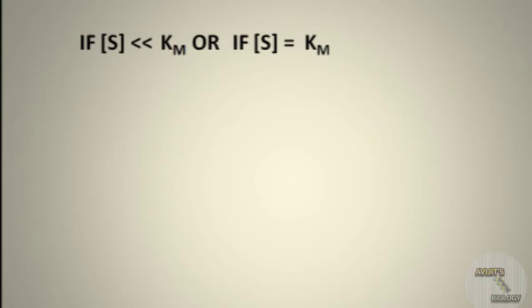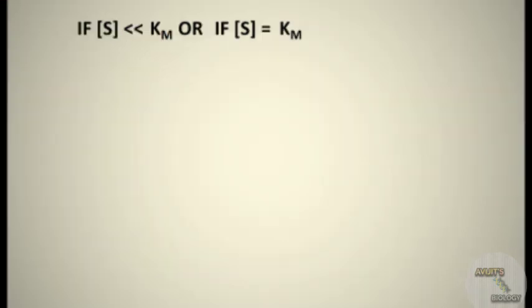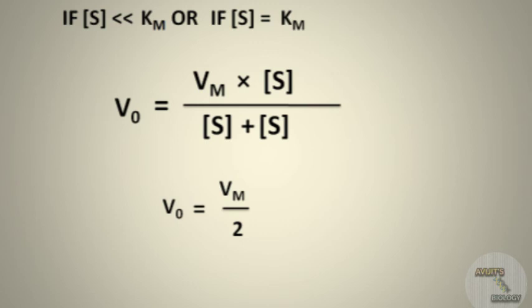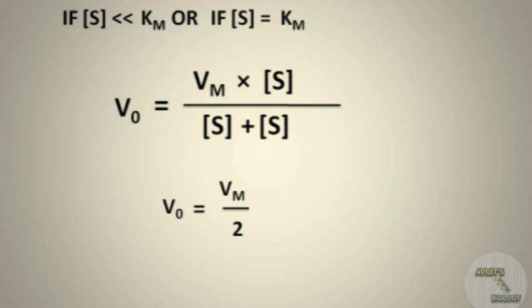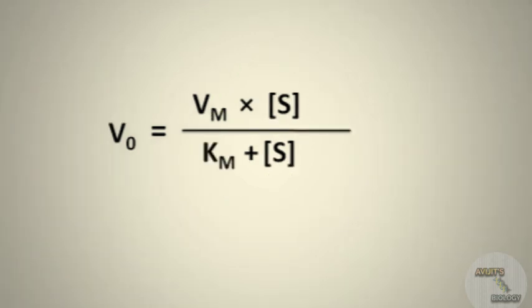When the substrate concentration is very small or equals the Km value, then Km is replaced by [S], giving V0 equals Vmax times [S] divided by [S] plus [S], which equals Vmax·[S] divided by 2[S], so V0 equals Vmax over 2. Therefore, Km is defined as the substrate concentration at which the rate of reaction is half of the maximum velocity Vmax.